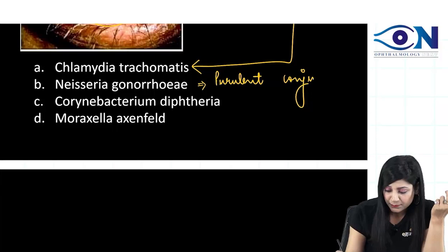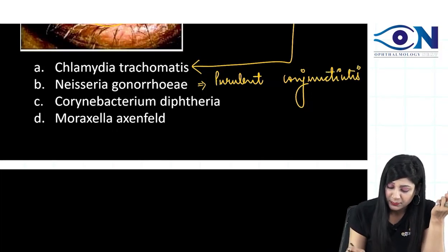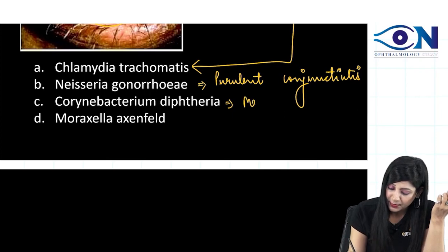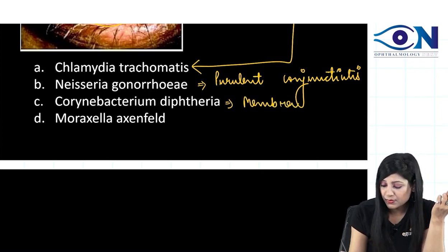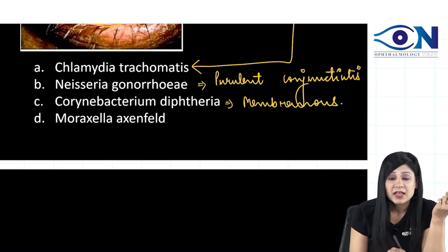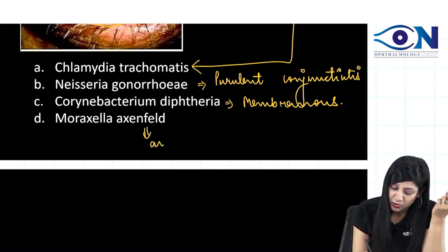This is causing purulent conjunctivitis. Then Corynebacterium diphtheriae is causing membranous conjunctivitis, and Moraxella axenfeld is causing angular conjunctivitis.